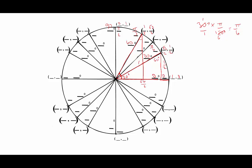Adding 30 degrees puts us at 120 degrees. 120 degrees is equivalent to 2pi/3. If we draw this triangle, it's a reflection of the 60-degree triangle, but because we're in quadrant 2, x is negative. So the coordinates are (−1/2, √3/2) — same as 60 degrees except x is negative, and y stays positive.